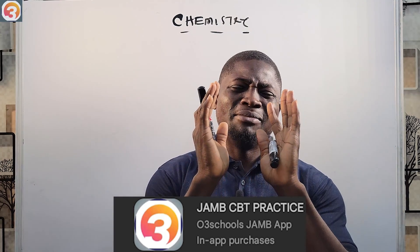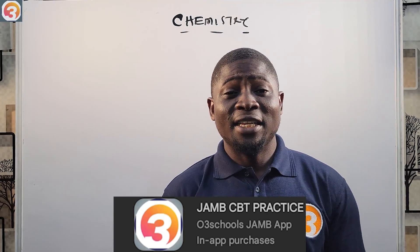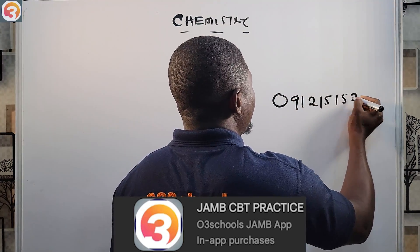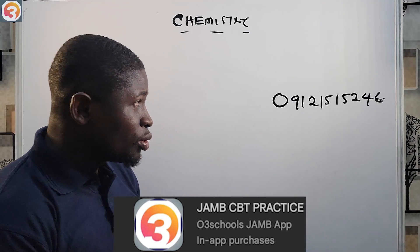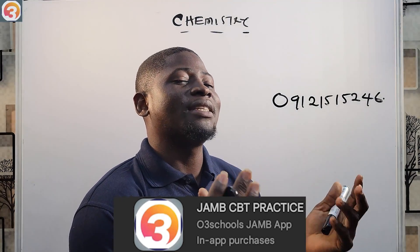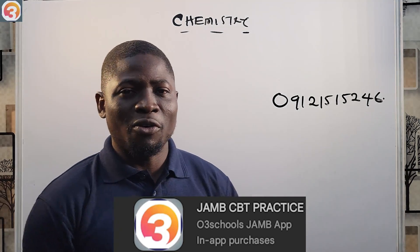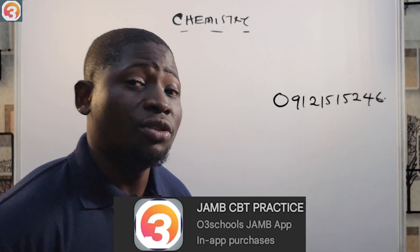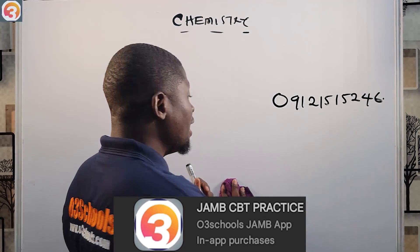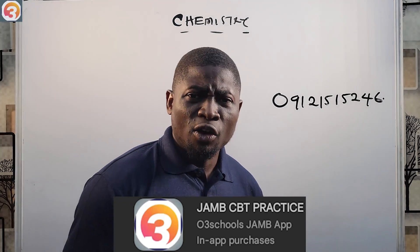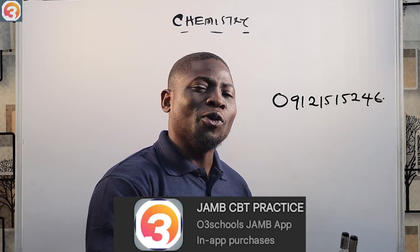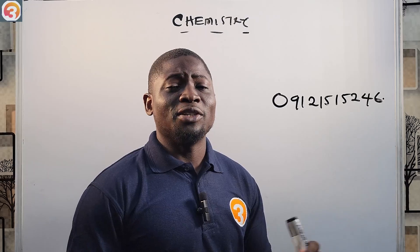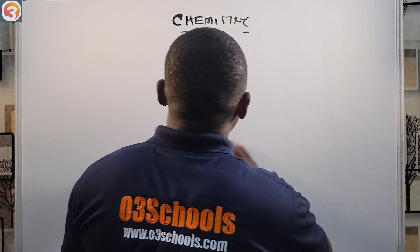Please download the app immediately, activate it, and start using it. To activate, send a message on WhatsApp to 09121515246. The app is also available for computer. Activation is just three thousand naira — it is better to pay three thousand naira than to rewrite JAMB or get a low score. Exploit all the chances you have to pass your exam.